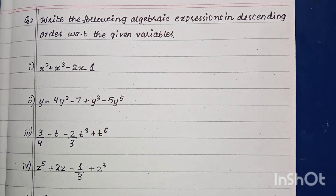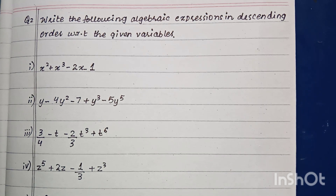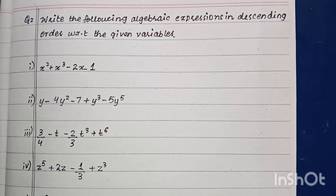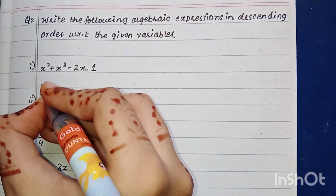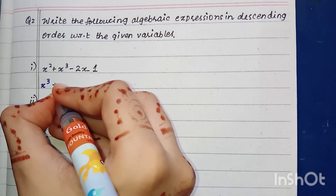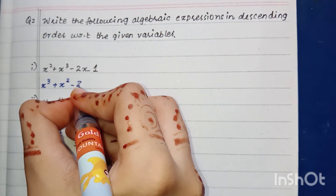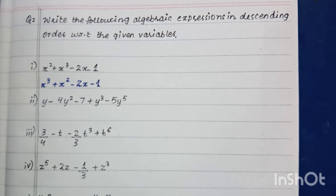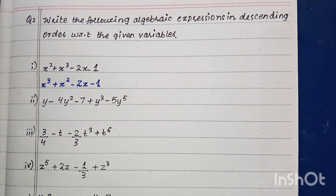Now we start question number two. In question two we have to arrange these expressions in descending order. Descending order means arranging from the highest power to the lowest. In part one, the highest power is x³, so we write x³ first, then plus x², then minus 2x, then minus 1.